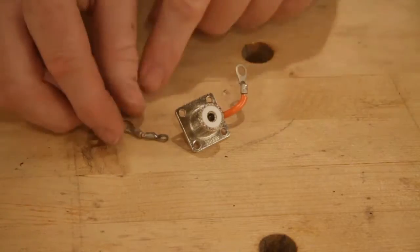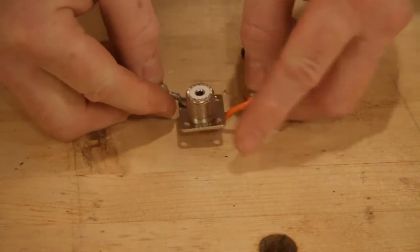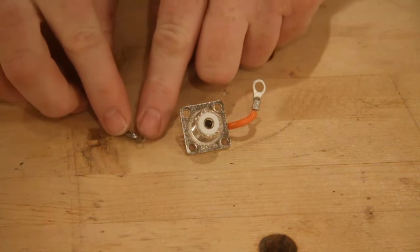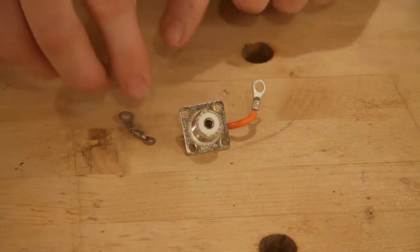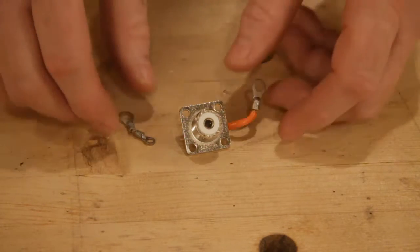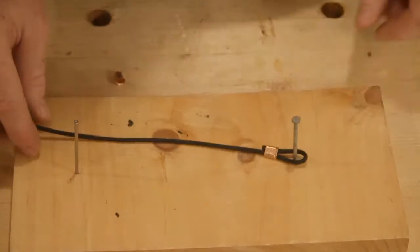And then we've got another connector to go to the other driven element, which is just a number six terminal lug and a number 10 terminal lug and they're all soldered. All of our terminal lugs are soldered even on the wires to our antenna itself.